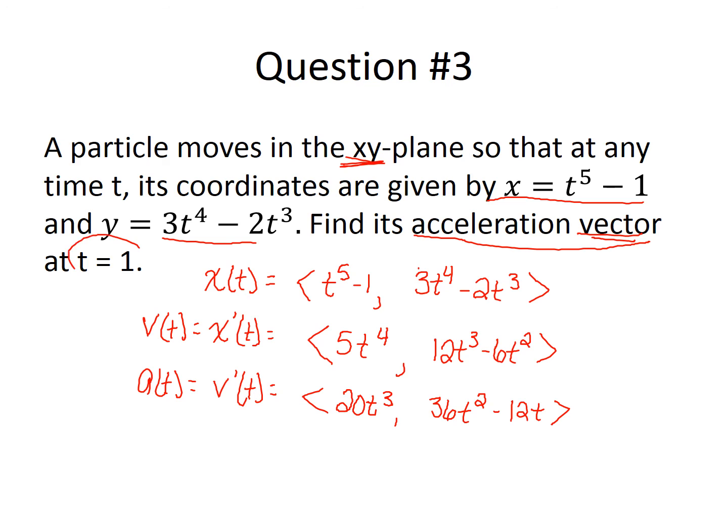We were asked to find the acceleration vector at t=1. So now I simply substitute in 1 to get my answer. I get that the acceleration vector at 1 equals 20 comma 24. That's my acceleration. It has an x coordinate of 20 and a y coordinate of 24. That's the acceleration vector.